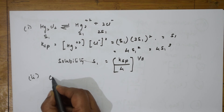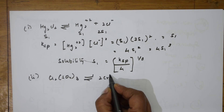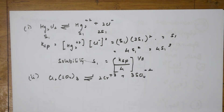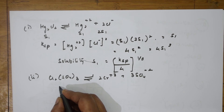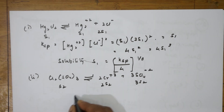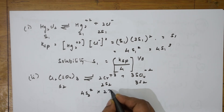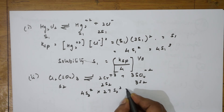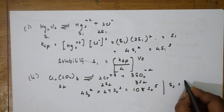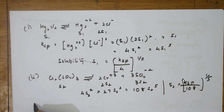For chromium sulfate Cr₂(SO₄)₃: it dissociates into 2Cr³⁺ and 3SO₄²⁻. With solubility s₂, Ksp = (2s₂)² × (3s₂)³ = 4s₂² × 27s₂³ = 108s₂⁵. Therefore s₂ = (Ksp/108)^(1/5).